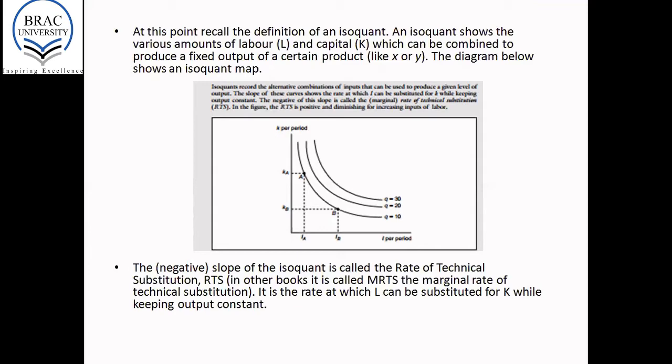Because as you move from LA to LB, you're lowering the usage of capital from KA to KB. What is the rate at which a unit of capital can be replaced by a unit of labor? That is what the RTS is.